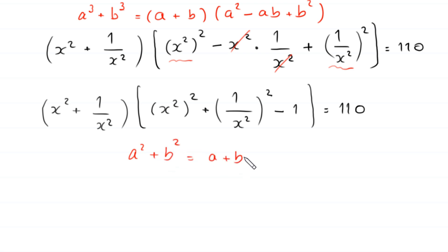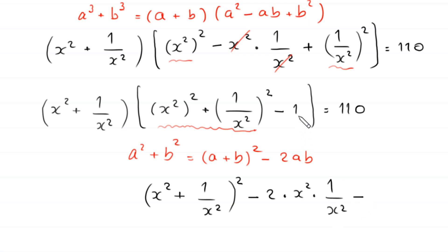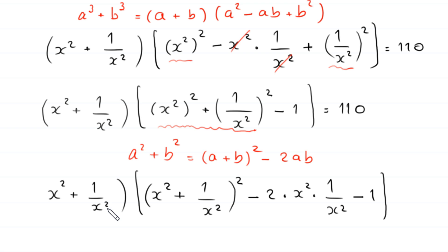Now by using the algebraic identity a² + b² = (a + b)² − 2ab, the expression (x²)² + (1/x²)² can be written as (x² + 1/x²)² minus 2 times x² times 1/x². This gives (x² + 1/x²) times ((x² + 1/x²)² − 2 times x² times 1/x² − 1) is equal to 110.